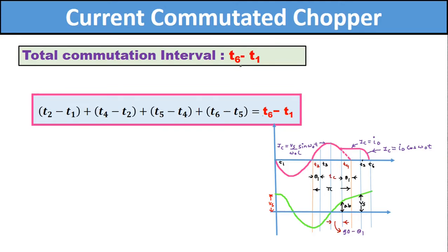Now we will find out the total commutation interval, which is T6 - T1. This equals (T2 - T1) + (T4 - T2) + (T5 - T4) + (T6 - T5). We will find all these intervals one by one and add them together. Commutation is completed at time T6 in the current commutated chopper.